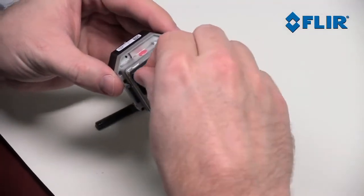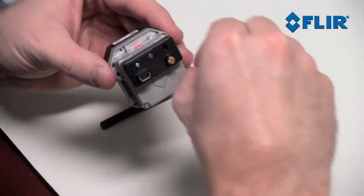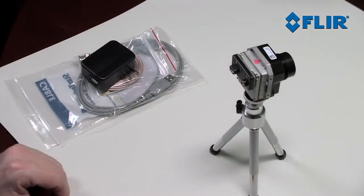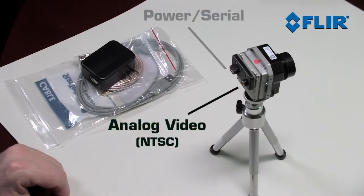Use the included socket head cap screws to secure the module to the camera. The VPC module provides two connections, one for analog video and another for power and serial communication.